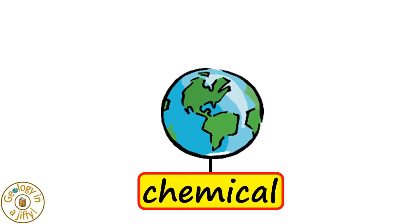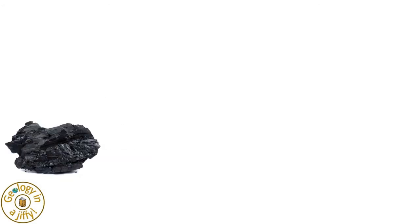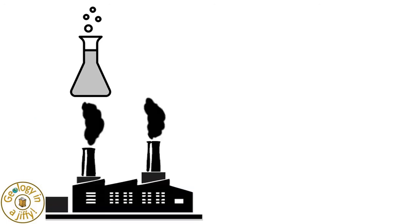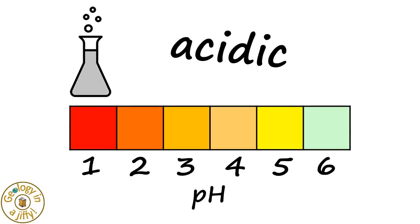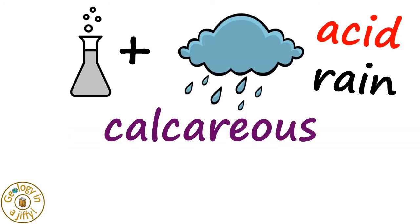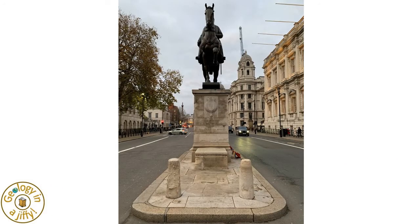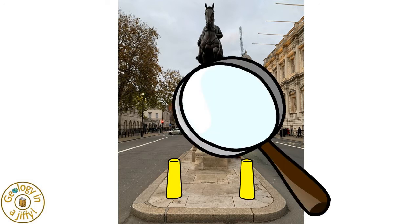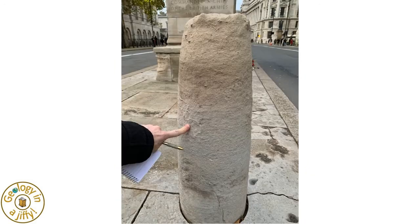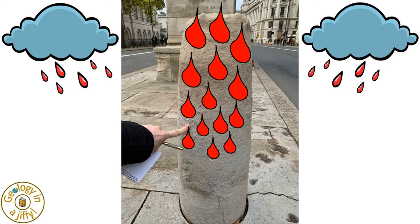Chemical weathering happens, in addition to these organism-originating chemicals, when we burn fuels, such as the fossil fuels coal, oil and gas. These release chemicals into the air — for example when burnt in power stations and cars — these gases being acidic, which, when dissolved in rainwater, can make acid rain, which can corrode calcareous rocks such as limestone and marble. This limestone statue, erected in 1937, stands in the centre of London, England. If we study the two limestone pillars, the right-hand pillar shows clear signs of more chemical weathering towards the top of the pillar, as the acid rain has dripped downwards on and within the rock.